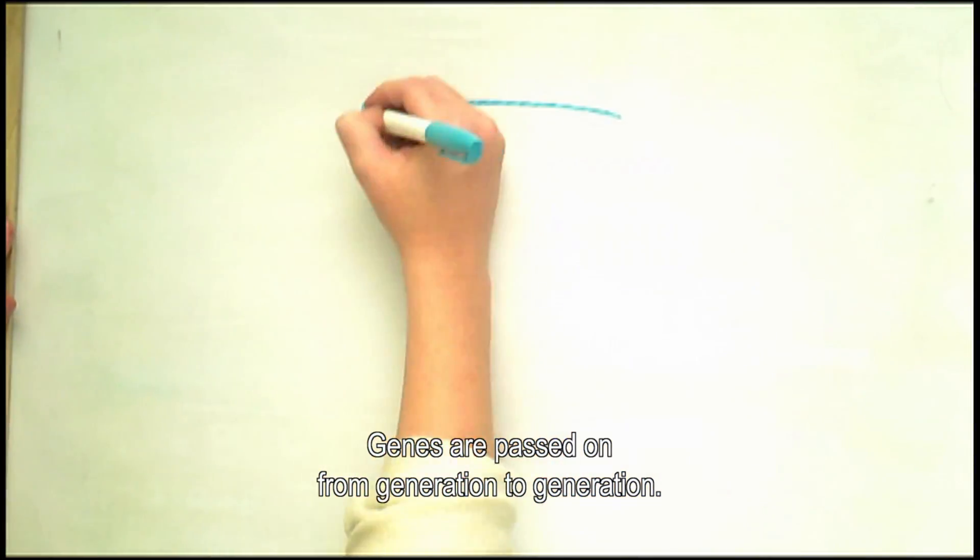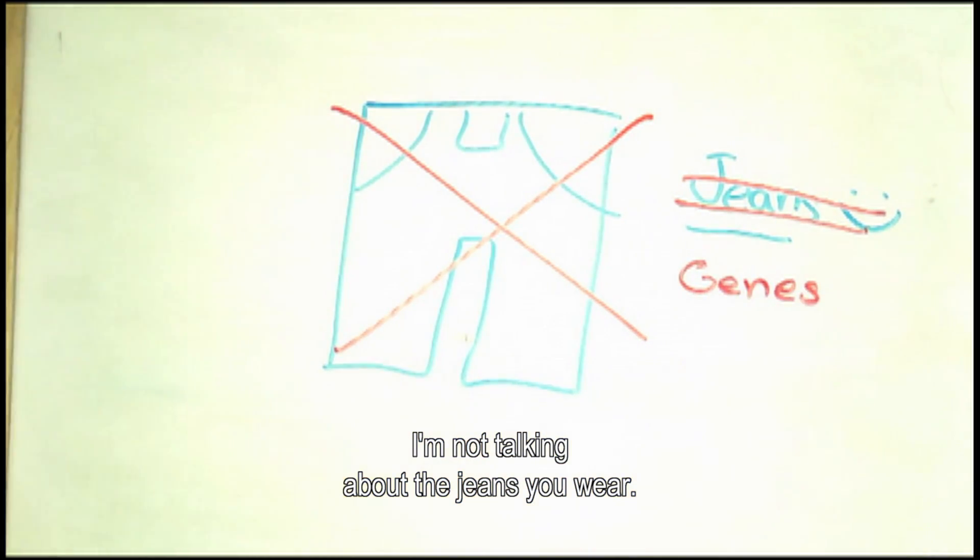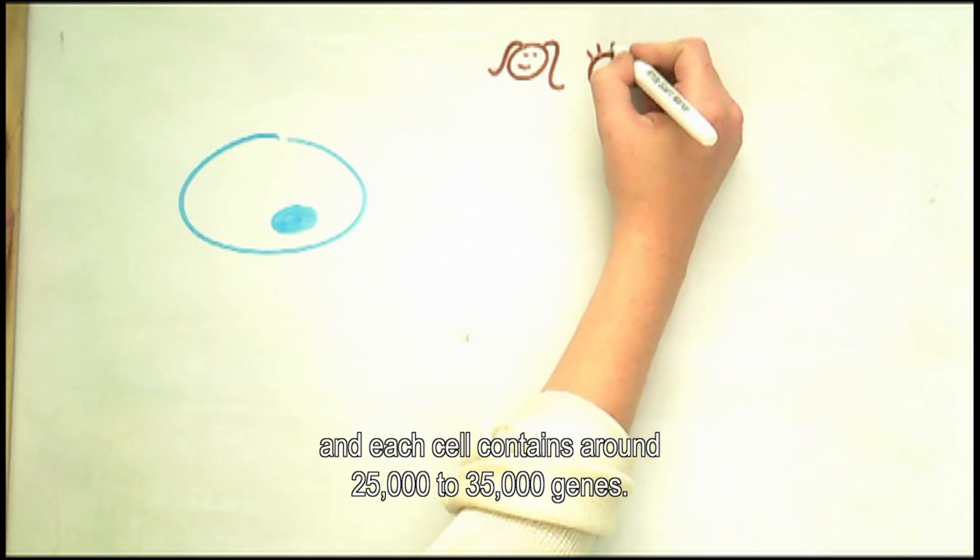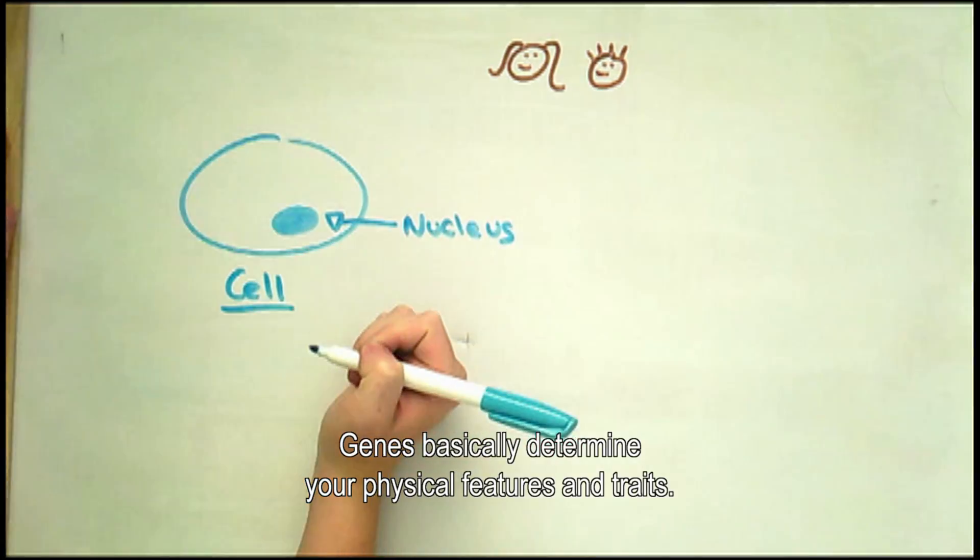Genes are passed on from generation to generation. And I'm not talking about the jeans you wear. In your body you have billions of cells, and each cell contains around 25,000 to 35,000 genes. Genes basically determine your physical features and traits.